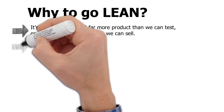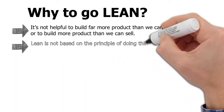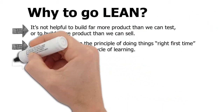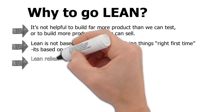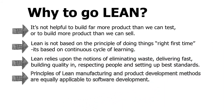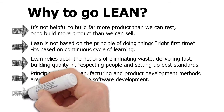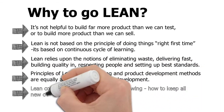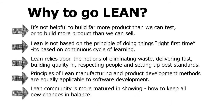I'll give you five reasons for why to go lean. First, it is not always helpful to build more products than you can use or test, or to produce more when you cannot sell them. Second, lean is not based on the principle of doing things right the first time — it is based on a continuous cycle of learning and improvement. Third, lean relies on eliminating waste, delivering fast-paced builds, building quality, and respecting people and setting best standards. Fourth, lean principles of manufacturing and product development are equally applicable to software development and IT. Fifth, the lean community is far more mature than any other production line, having been in the market since the 1950s.